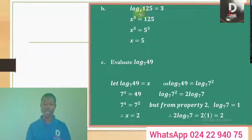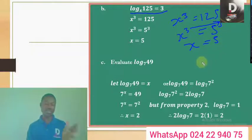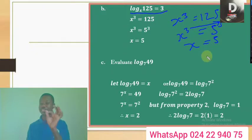Looking at more examples: log_x 125 = 3. The base raised to the power of the answer equals 125, so x³ = 125. What number cubed gives 125? It's 5, because 5³ = 125. When the powers are the same, equate the bases, so x = 5. Just write the base raised to the power of the answer equals the log number, and the missing term will come out.